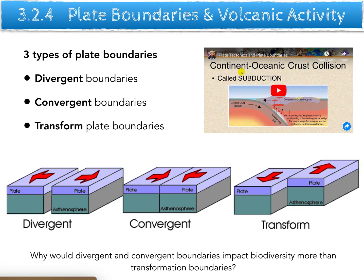India is on its own plate, and it has slammed into Asia, creating the Himalayan mountains. A transform plate boundary is where one plate is shifting in the opposite direction to the other — you can see that in the San Andreas Fault in California. The question arises, one that the IB might like to throw your way, is why would divergent and convergent boundaries impact biodiversity more than transform boundaries?